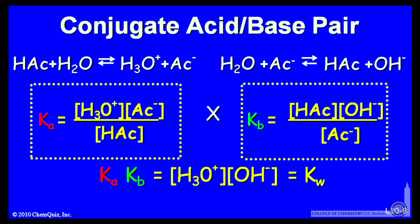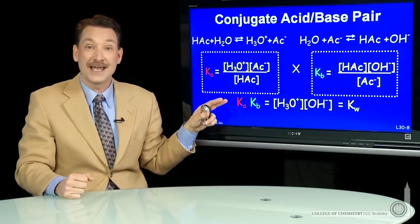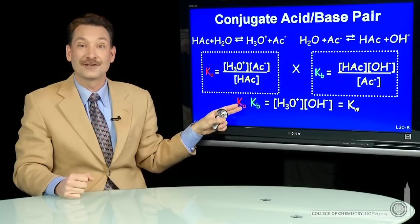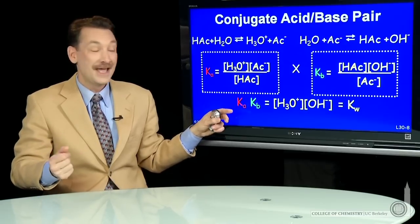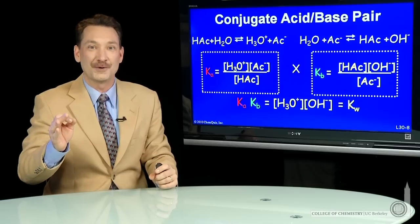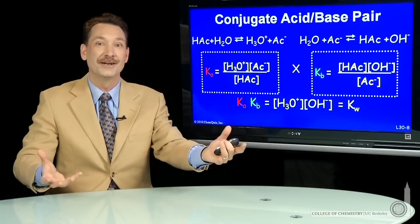That is Kw. So now I have, analytically, that the product Ka times KB is a constant. So if Ka gets larger, a stronger acid, KB must get smaller. So I have an analytical expression for strong acid means a weaker conjugate base.